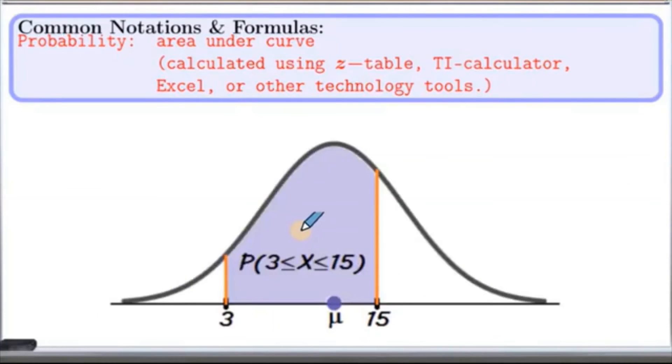Similarly, if we have to find probability between two values, then we have to find the area between those two values. For example, if you are looking at this graph here, here we are trying to find the probability between 3 and 15, between here to here.